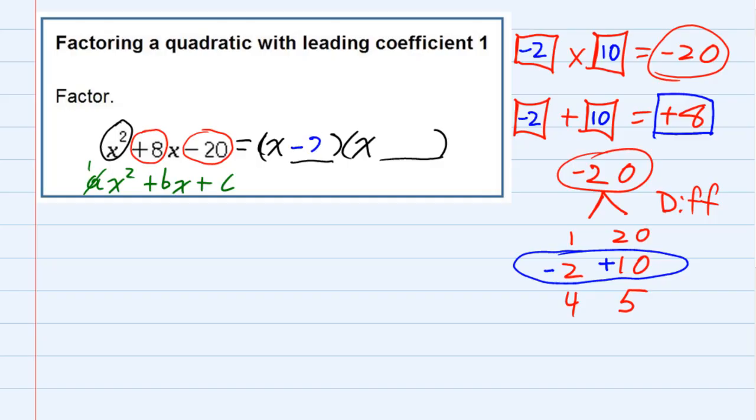One of these needs to be negative 2, and the other one needs to be positive 10. The order doesn't matter here, but just to check it and make sure that our answer is correct, we should multiply it out just to see what happens.